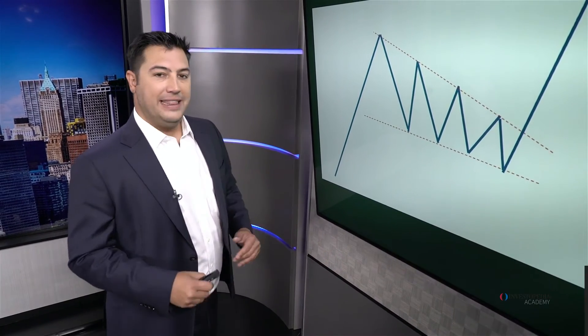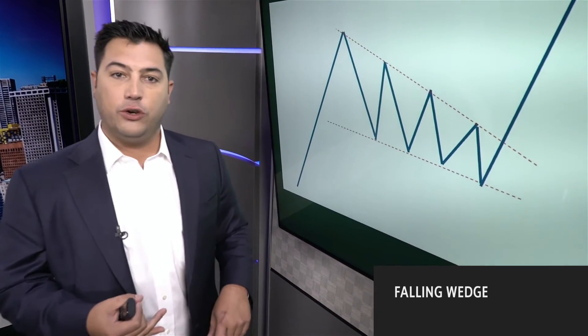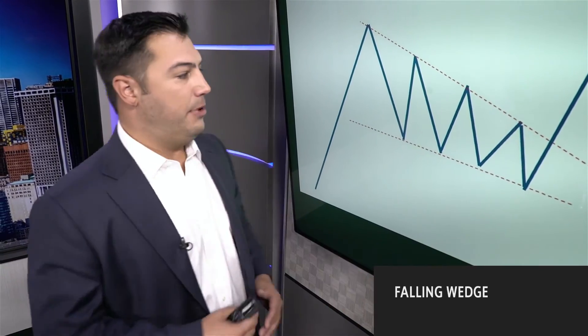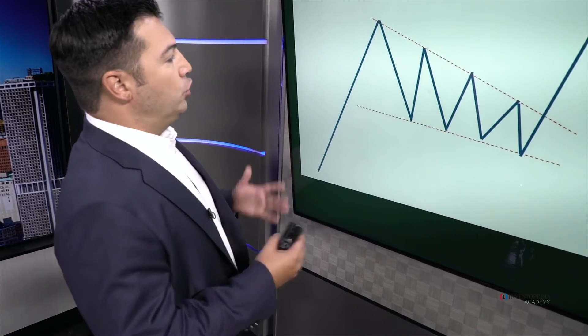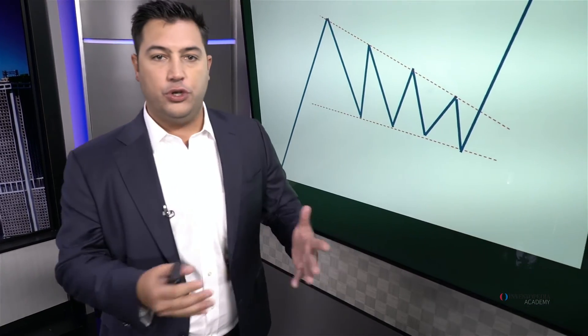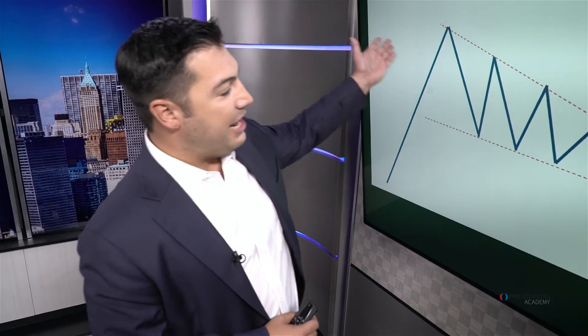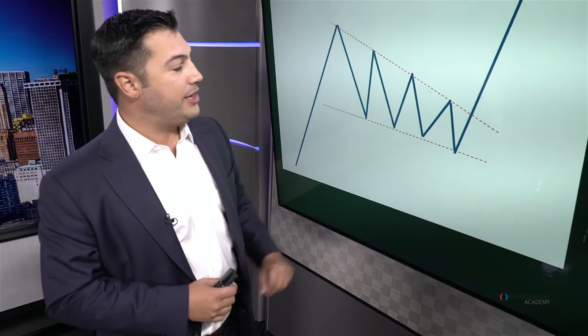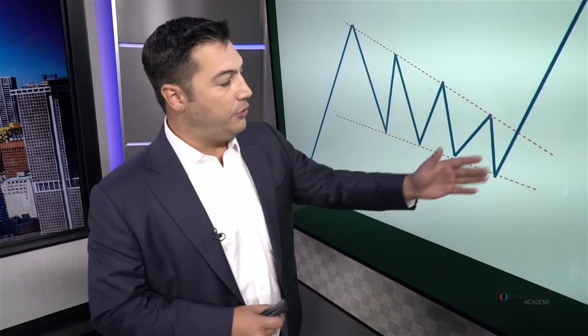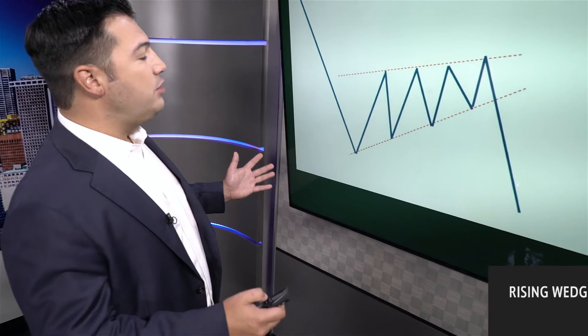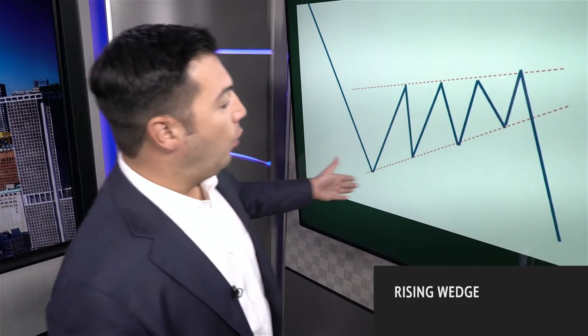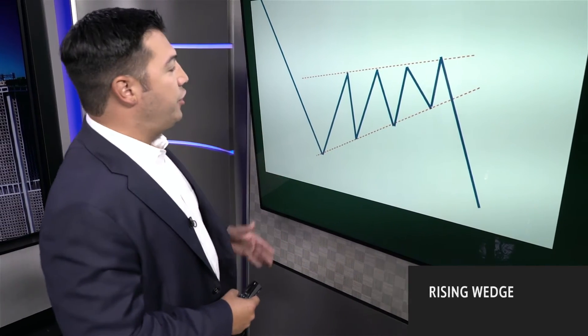Now let's talk about wedges. These have the same implications as triangles and rectangles — they are continuation in nature — but they have a different name because both trend lines are trending counter to price. Rather than a symmetrical, ascending, or descending triangle, in a wedge both trend lines are declining. So you have a prior uptrend, prices in a falling wedge between two converging downtrend lines, and the upside resolution normally comes somewhere between two-thirds and three-quarters of the way to the apex. Conversely, a rising wedge within a downtrend resolves lower once the lower boundary is broken, continuing the prior downtrend.